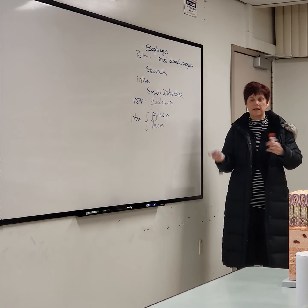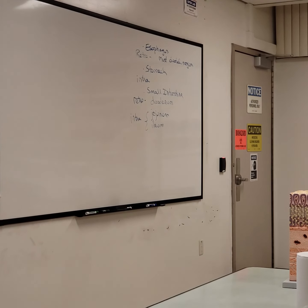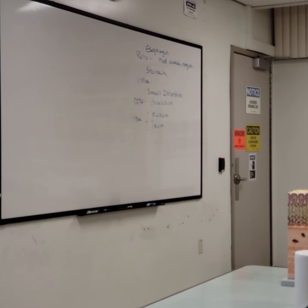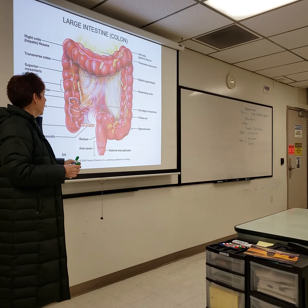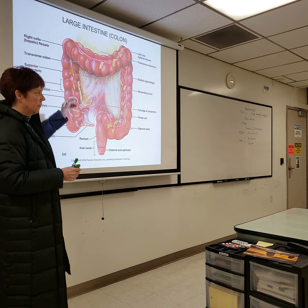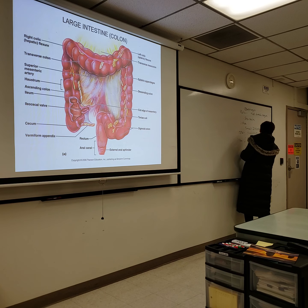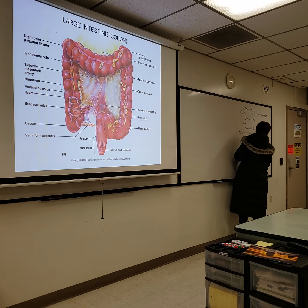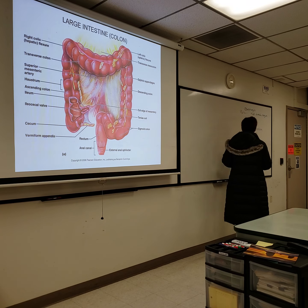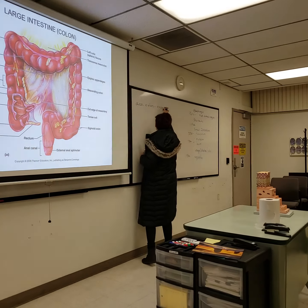We kind of go back and forth: retro, then intra, then retro, then intra. We continue this pattern with the large intestine. The ileum comes out of the mesentery proper. The appendix actually has its own mesentery, so it's intra. The ascending colon is retro.